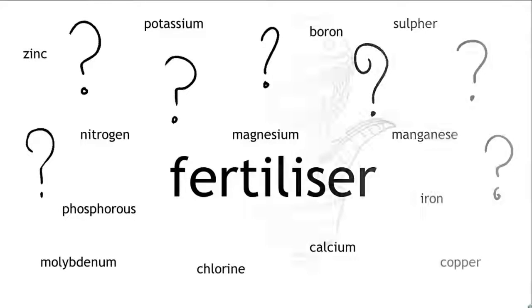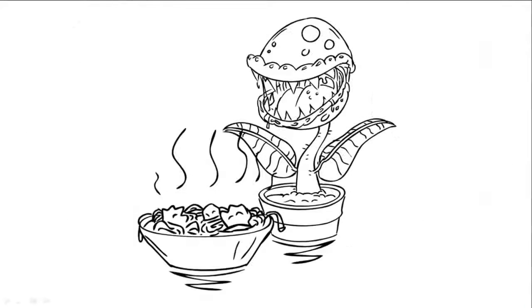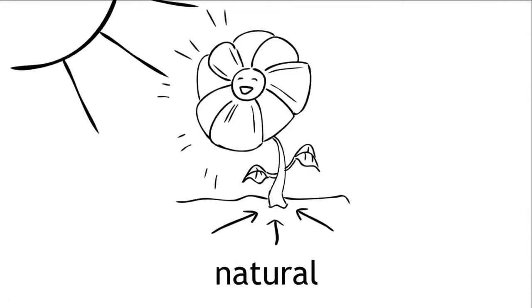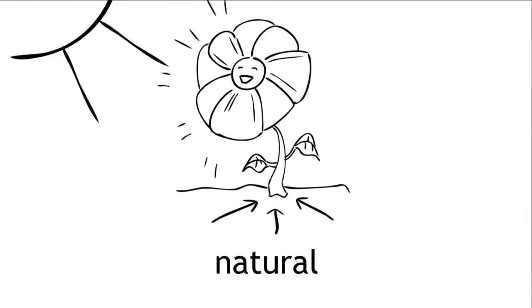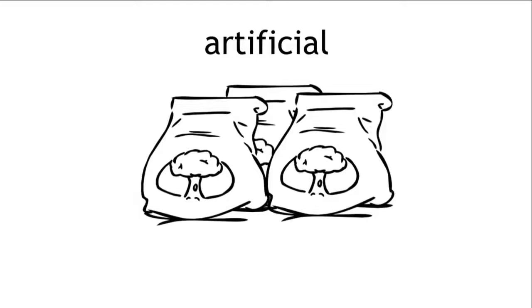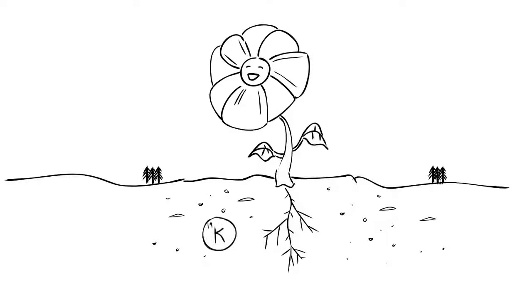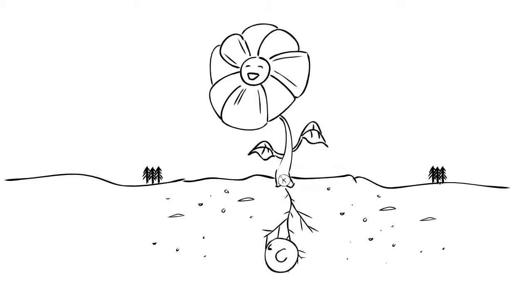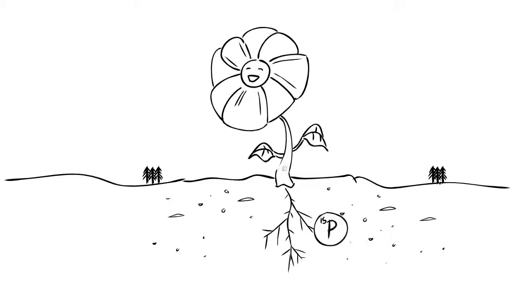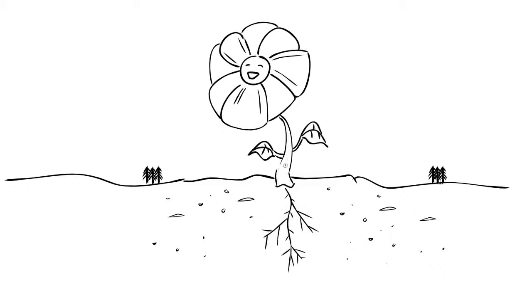Simply, fertiliser is plant food. It can be natural or deliberately put into soil by people. Fertiliser contains different kinds of nutrients that are essential for plants to grow.